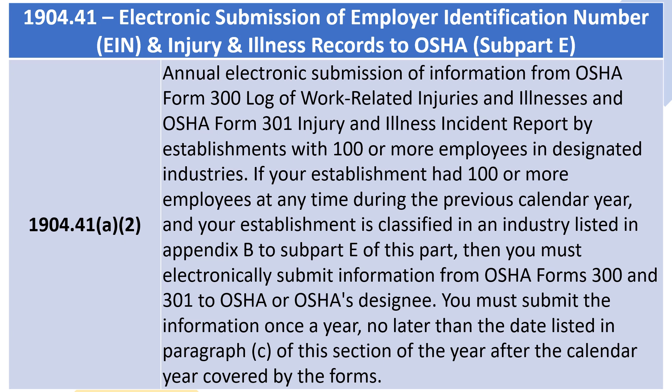1904.41(a)(2): Annual Electronic Submission of Information from OSHA Form 300, Log of Work-Related Injuries and Illnesses, and OSHA Form 301, Injury and Illness Incident Report, by Establishments with 100 or more employees in Designated Industries. If your establishment had 100 or more employees at any time during the previous calendar year and your establishment is classified in an industry listed in Appendix B to this subpart, then you must electronically submit information from OSHA Forms 300 and 301 to OSHA or OSHA's designee once a year, no later than the date listed in Paragraph C of this section.